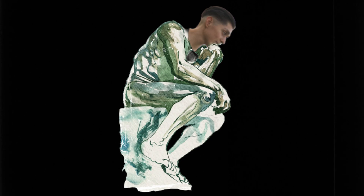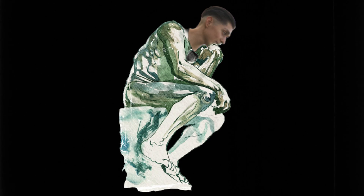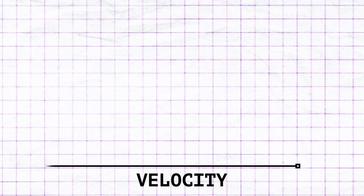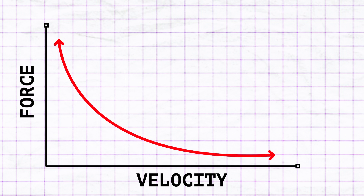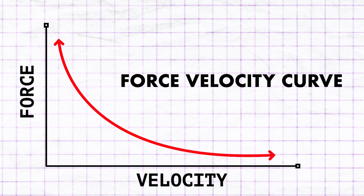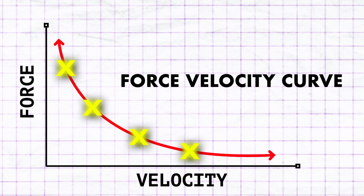This is something I've been thinking about a lot recently and I want to show you what I've learned. I'm going to draw you a graph. One side represents velocity — we can think of this as how fast you're moving. The other side represents force — we can think of this as how much strength you're using. This line represents the relationship between moving very fast and producing high amounts of force.